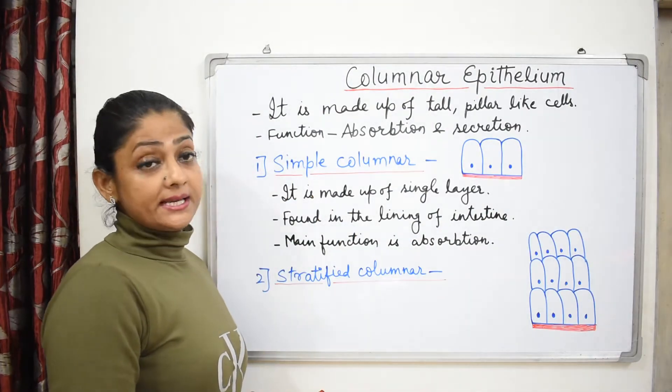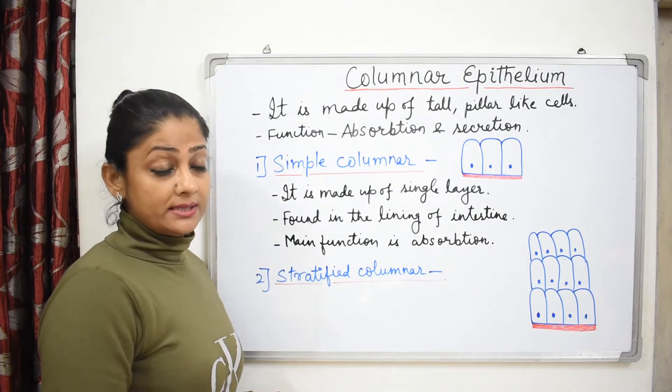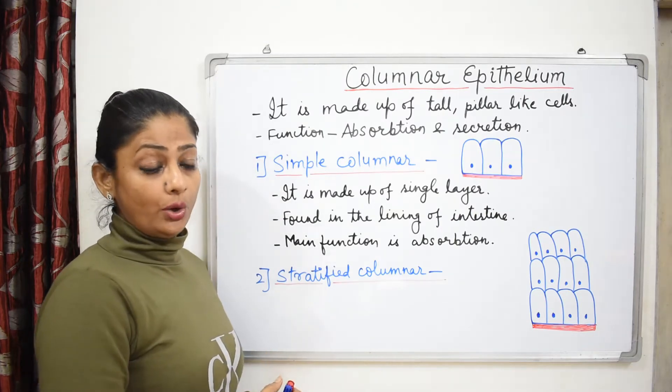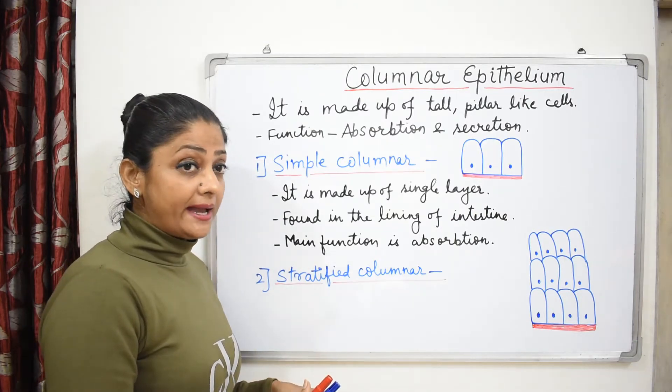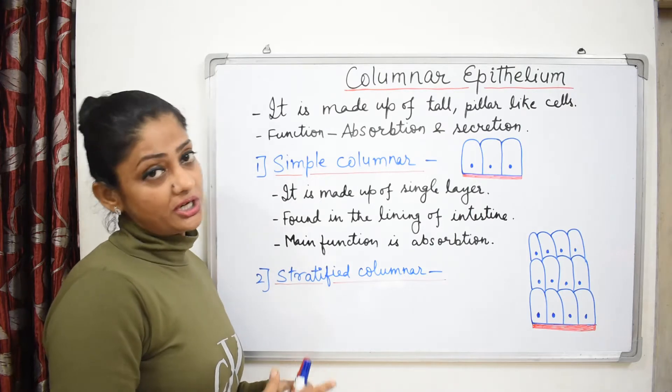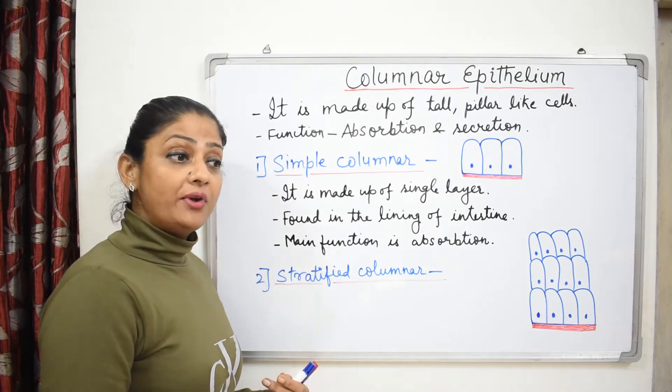Second type is stratified columnar. Stratified means it will be made up of many layers where there is more friction. For example, anus and pharynx.